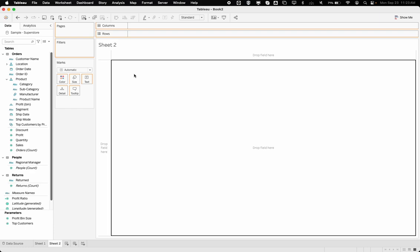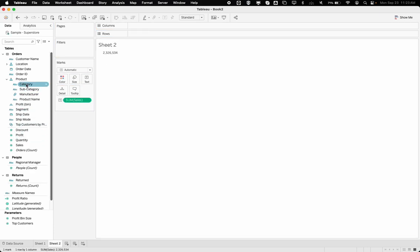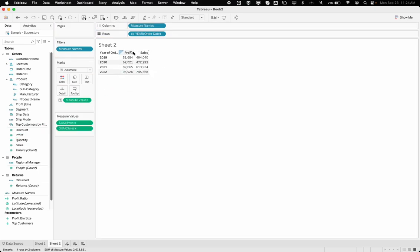So I have sales over here and then maybe you want to look at this over a year on year basis. I can drag that to rows and then I have year over year and these are my sales. But let's say I also have my profit over here.